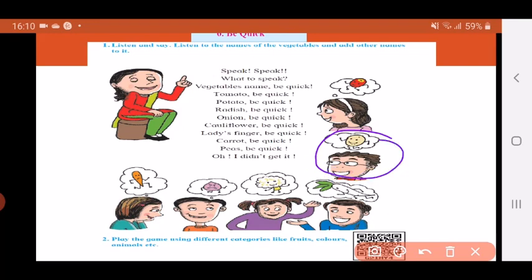So he answers potato, be quick. Then the third person, he's thinking about a radish. So fast he says radish, be quick. Then the next person says onion, be quick. Then the next person says cauliflower, be quick. Then lady's finger, be quick. Lady's finger means bhindi.